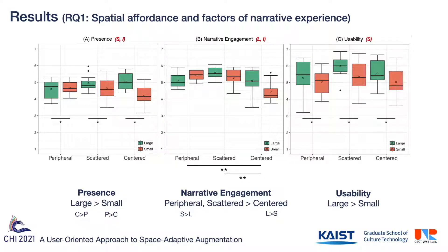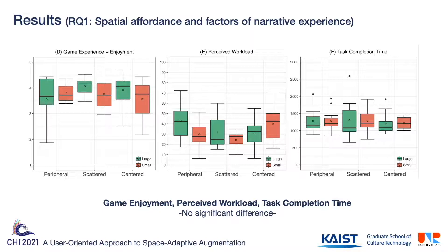Results show that presence was significantly higher in the large rooms than in the small, with an interaction effect for layout. Narrative engagement was significantly lower in the centered layout than the peripheral and scattered. Usability was significantly affected by size, being higher in the large than the small. On the other hand, there was no significant difference across all conditions for game enjoyment, perceived workload, and task completion time.